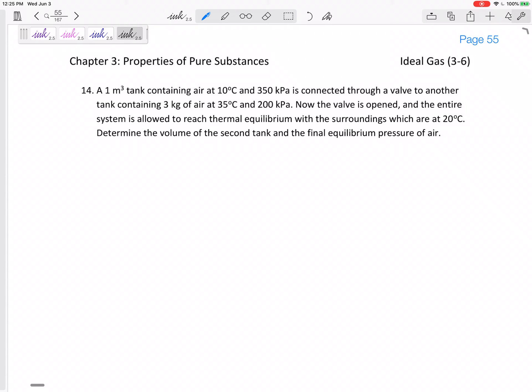Then you got to figure out how to get there. So here we go. We've got a 1 m³ tank containing air at 10°C and 350 kPa. It's connected by a valve to another tank containing 3 kg of air at 35°C and 200 kPa. The valve is opened and the entire system is allowed to reach thermal equilibrium with the surroundings which are at 20°C. Determine the volume of the second tank and the final equilibrium pressure of the air.